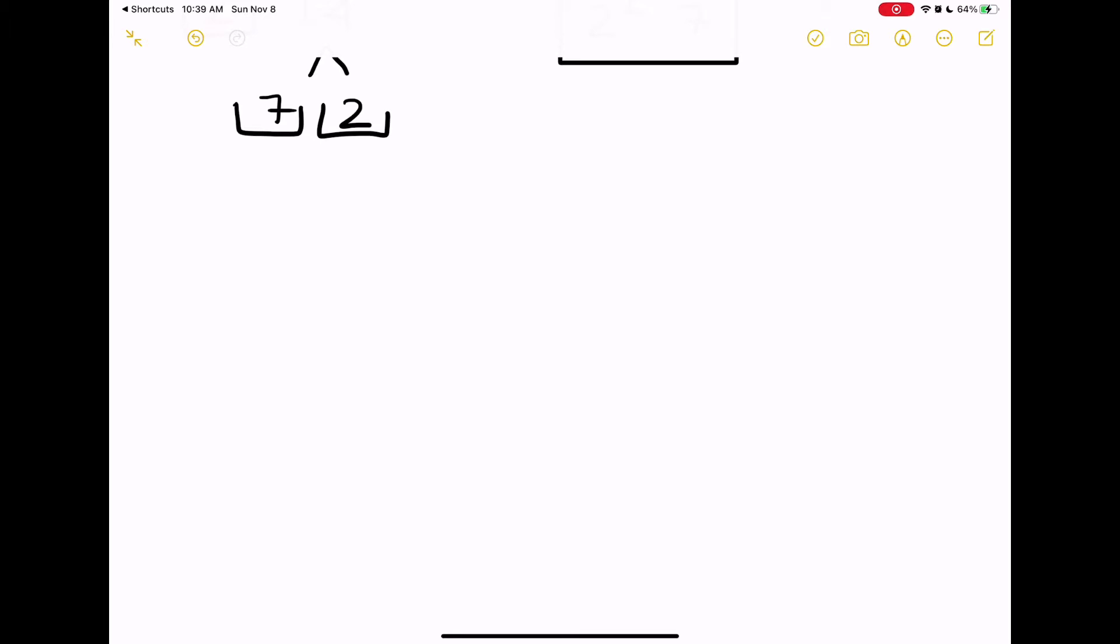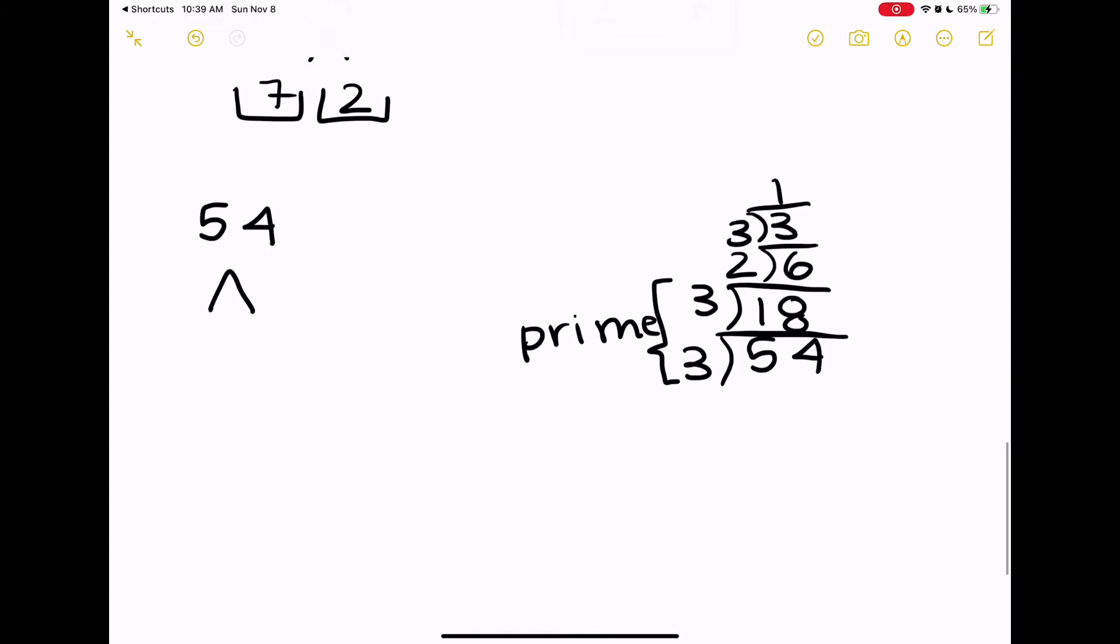So as I said before, this is called the tree method but there is another method that you can use. Let's say we have 54. Well you can use the tree method and that's what I prefer, but you can also use this method where you continuously divide by prime numbers. So let's say I divided 54 by 3, well that's 18, but 18 can still be divided by another prime number. So what you're doing is you're just constantly dividing by prime numbers until you get to the top of the tree which should be 1.